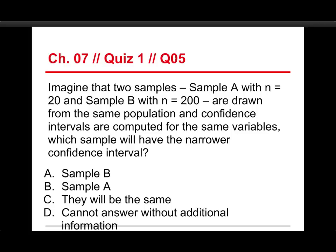Okay, last question in quiz one. Imagine that two samples, sample A with an n of 20 and sample B with an n of 200 are drawn from the same population and confidence intervals are computed for the same variables. So the only thing that's different is the sample sizes. 20 in one case, 200 in the other. And which sample will have the narrower confidence interval? The choices are sample B, sample A, or they'll be the same or that you can't answer it without additional information. Well the answer is B.